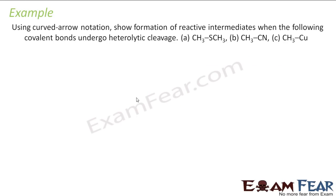The question is using curve arrow notation, show the formation of reaction intermediates when the covalent bond undergoes heterolytic cleavage.